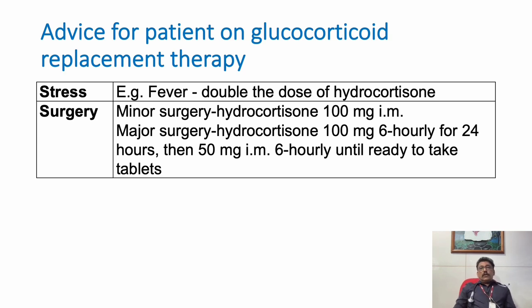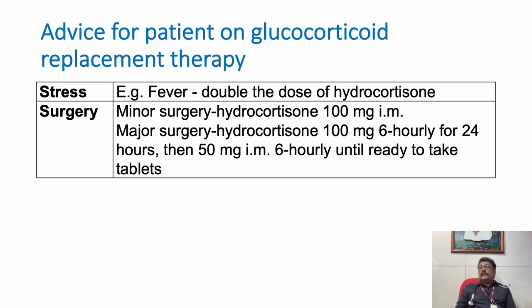Whenever a patient on chronic steroid use is undergoing surgery or a stressful condition, we will have to increase the dose of steroids. For minor surgery, hydrocortisone 100 mg IM can be given as an extra dose — otherwise the patient can go into hypotension due to stress-induced adrenal insufficiency. For major surgery, hydrocortisone 100 mg 6th-hourly is very important — either as boluses or as a continuous infusion of 100 mg; both have similar actions.